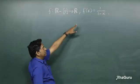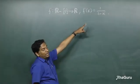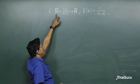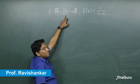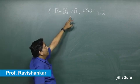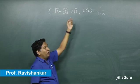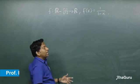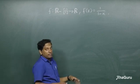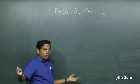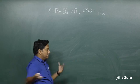We are given a function f(x) = 1/(1-x), whose domain is ℝ minus the element {1}, and the co-domain is the set of all real numbers. We are asked whether it's 1-1, onto, both, or neither.